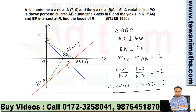In fact, the locus of point R will be a circle in which A and B are the diametric endpoints, because this angle is always 90° and the angle in a semicircle is 90°. So the locus of point R is a circle.